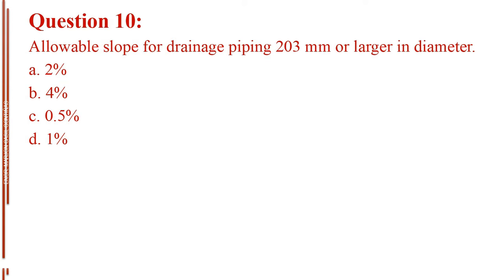Question number 10. Allowable slope for drainage piping, 203 mm or larger in diameter. Letter A, 2%. Letter B, 4%. Letter C, 0.5%. Letter D, 1%.